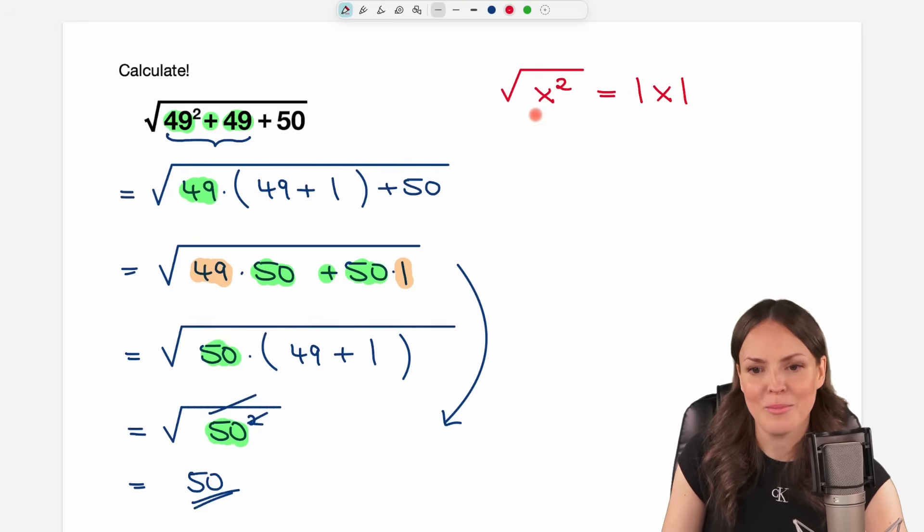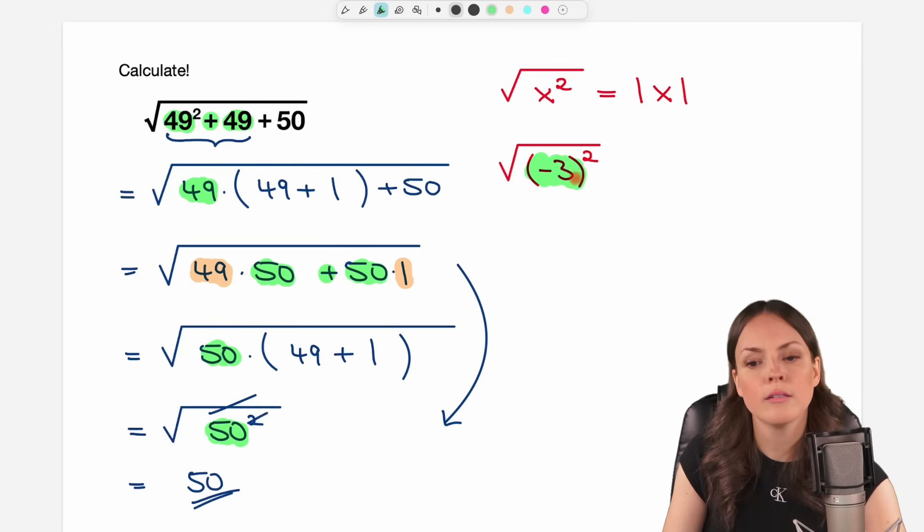Let's take a look at an example. If you have the square root of a negative number, let's say negative three in here and we square this number, so exactly this structure here, we have a number in here that is squared. Now we cannot just cancel this and this out and say the result is going to be negative three because we take a square root here.